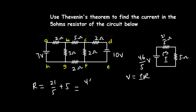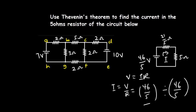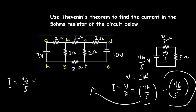The current I equals voltage divided by resistance, which is (46/5) divided by (46/5). The 46s and the 5s cancel out, giving I equal to 1 ampere. That is the current flowing through the 5-ohm resistor.